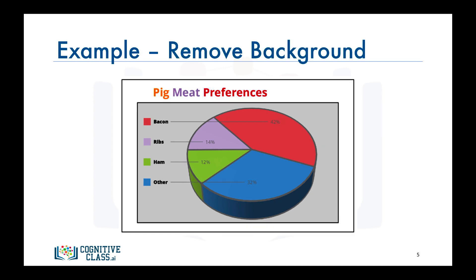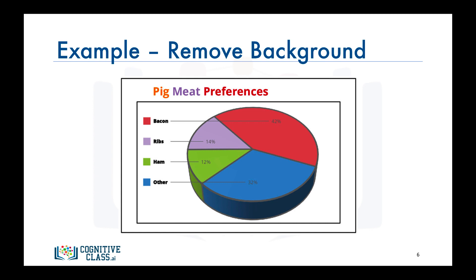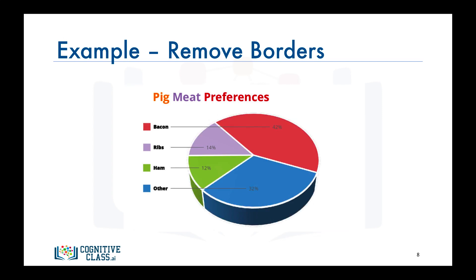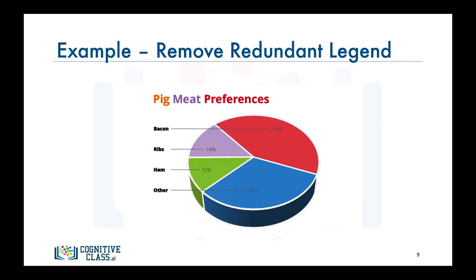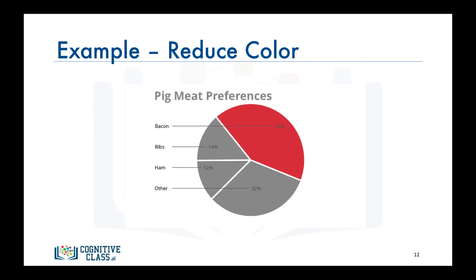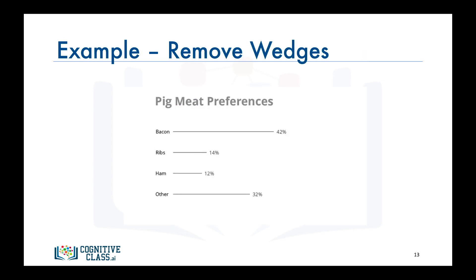The first thing is, let's get rid of the blue background and the grey background. Let's also get rid of borders, as they do not convey any extra information. Also, let's drop the redundant legend, since the pie chart is already color-coded. 3D isn't adding any extra information, so let's say bye to it. Text bolding is also unnecessary. And let's get rid of the different colors and the wedges.